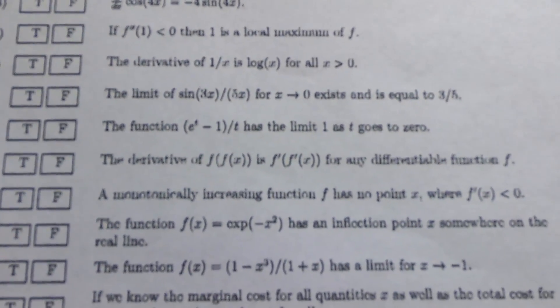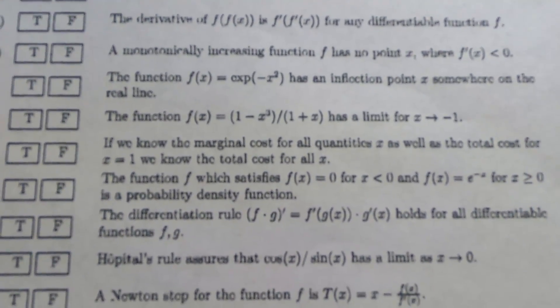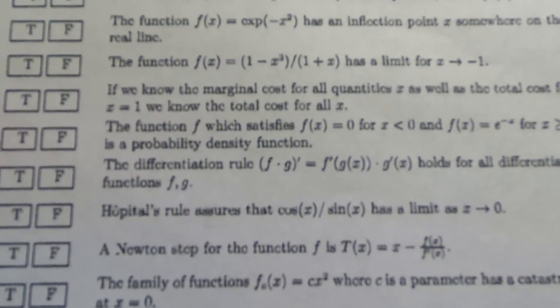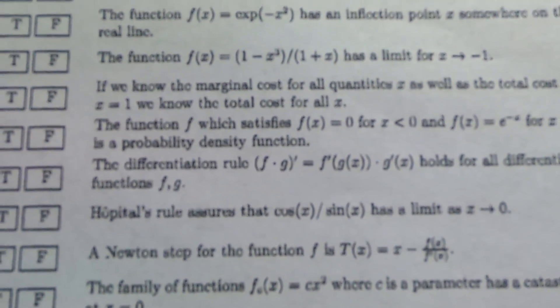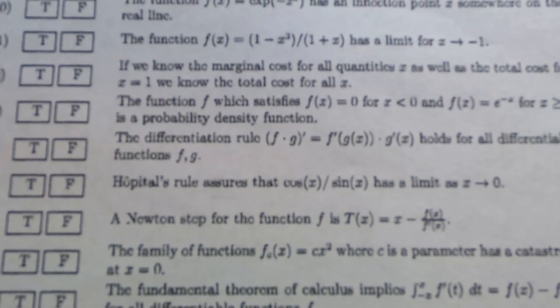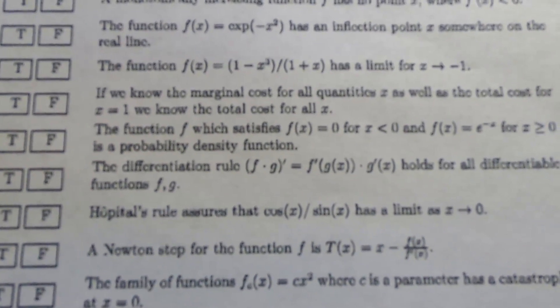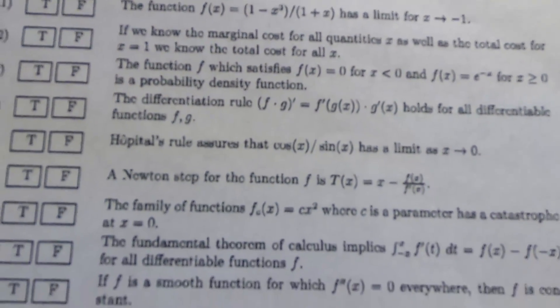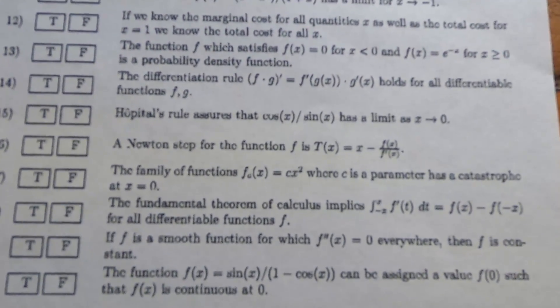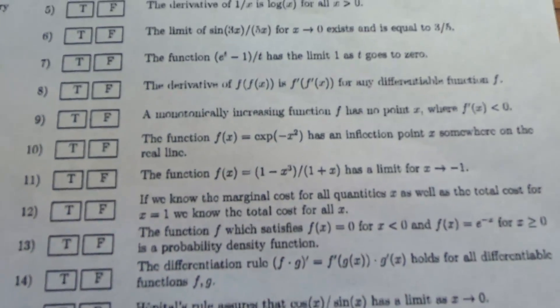And the nice thing is, if you guess, you have a 50-50 shot. Now, ideally, you don't want to guess. Ideally, you want to have the question right. Look at this one. L'Hôpital's rule assures that cosine x over sine x has a limit as x goes to 0. That's not true because if you plug in 0 there, you're going to get cosine of 0 over sine 0. So you're going to get 1 over 0. So you can't even use L'Hôpital's rule, right? Ridiculous. It's really, really fun. I highly recommend you try this test and see what you think. And the cool thing is, there are solutions. Again, I'll put the link in the description. Let's keep going through this test, though. It gets a lot more interesting.